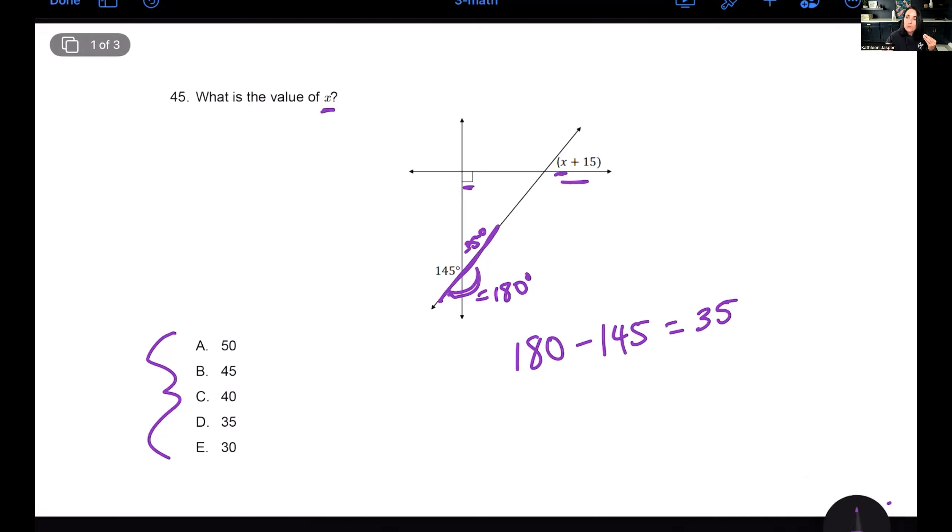Supplementary angles added up equal 180 degrees because a straight line equals 180 degrees. So if I were to take 180 and subtract 145, I could find the answer to that little angle right there because I need it in order to be able to figure out what x is in this situation. So 180 minus 145 is 35.